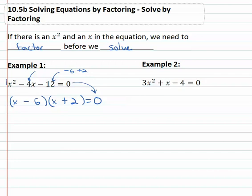And now that it's factored, we have two things multiplied together that equals zero. That means one of them must be zero. We'll say x minus 6 equals zero or x plus 2 equals zero.